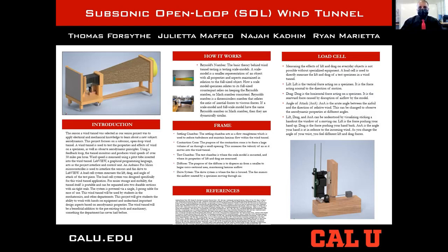There are five main sections of a wind tunnel: the settling chamber, the contraction core, the testing chamber, the diffuser, and the driver section. The purpose of the settling chamber is to create laminar airflow. The purpose of the contraction core is moving a large volume of air through a small opening. The testing chamber is where the lift and drag forces are measured. The diffuser disperses air from small to large cross-section areas. And finally, the drive system is where the fan is mounted.